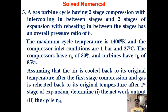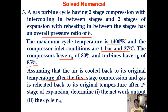Let us solve this problem. A gas turbine cycle having two-stage compression with intercooling between stages and two-stage expansion with reheating in between the stages has an overall pressure ratio of 8.